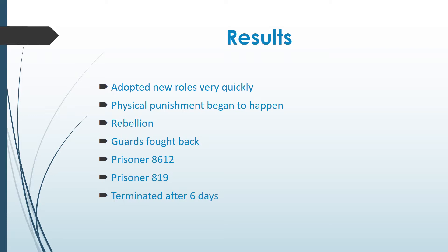Prisoners were given pointless and boring tasks, and push-ups were the most common form of physical punishment. Guards would step on prisoners' backs or have other prisoners sit on the backs of fellow prisoners during push-ups. The guards were completely surprised when a rebellion broke out on the morning of the second day. Prisoners ripped their ID numbers off their uniforms and barricaded themselves inside cells with their beds. Guards sprayed them with fire extinguishers, broke in, stripped them naked, and took their beds. The most involved prisoners were sent to solitary confinement, while less involved ones were given clothes, beds, and special privileges. The guards became more assertive and aggressive after the rebellion.